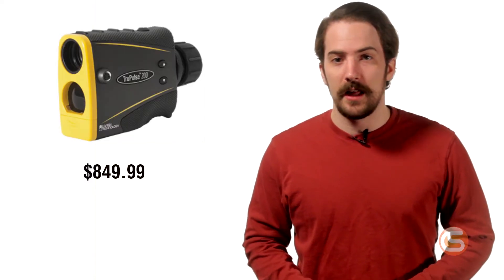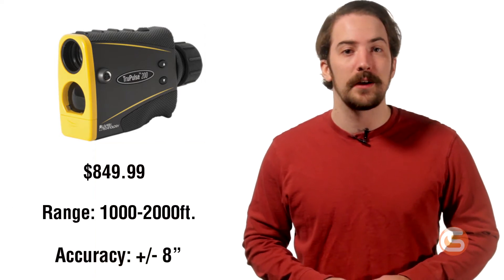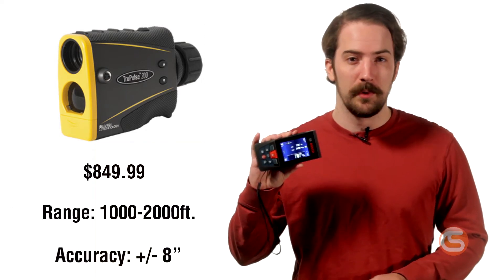Whereas at nearly $900, the TruPulse 200L has an accuracy margin of 8 inches at over a thousand feet. So it's safe to say this thing can hang with the big boys.